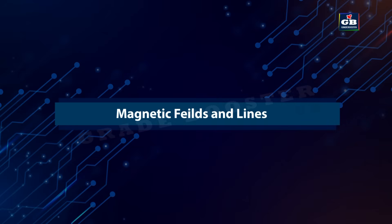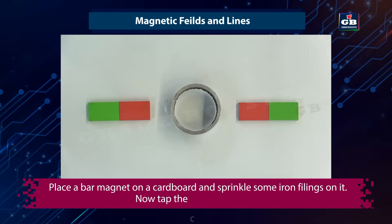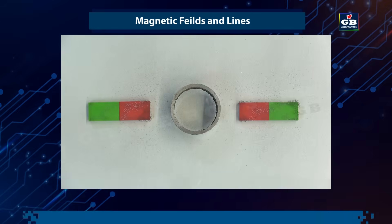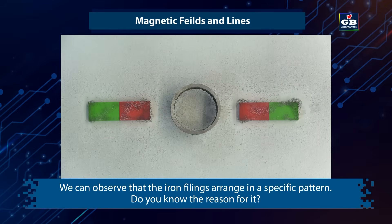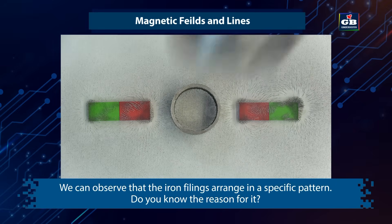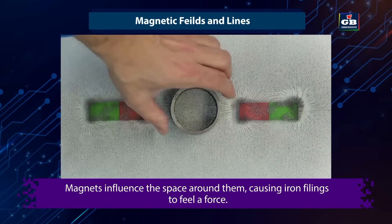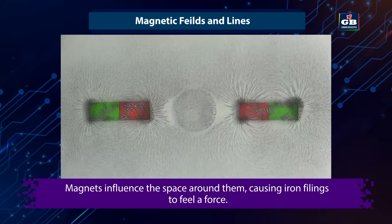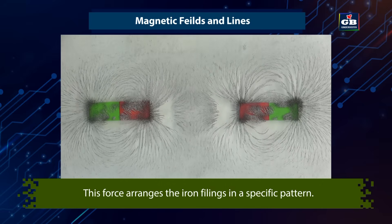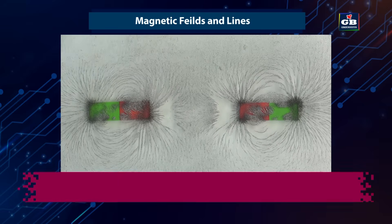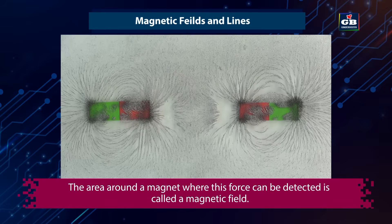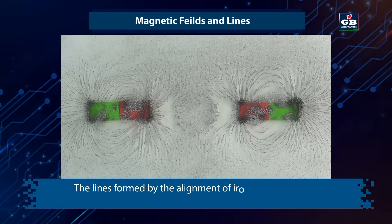Magnetic fields and lines. Place a bar magnet on a cardboard and sprinkle some iron filings on it. Now tap the cardboard gently. We can observe that the iron filings arrange in a specific pattern. Magnets influence the space around them, causing the iron filings to feel a force. This force arranges the iron filings in a specific pattern. The area around a magnet where this force can be detected is called a magnetic field.